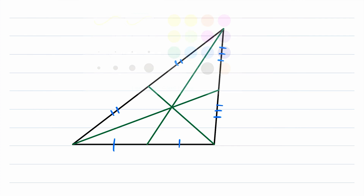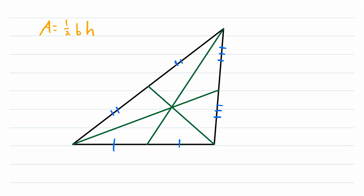Since we're trying to prove something about triangle areas, we should keep the area formula in mind. The area of a triangle equals one half times the base times the height, so if two triangles have the same base and the same height, they have to have the same area. With that in mind, let's start demonstrating equal areas. These two triangles already have the same base, and the height from the opposite vertex down to that base is the same for both. Since they have congruent bases and equal heights, they have the same area — we'll call that area A.